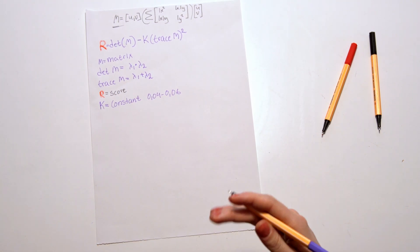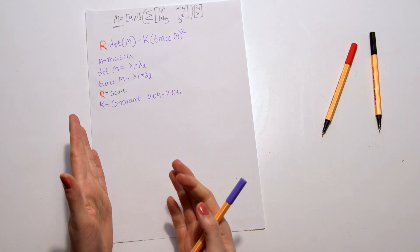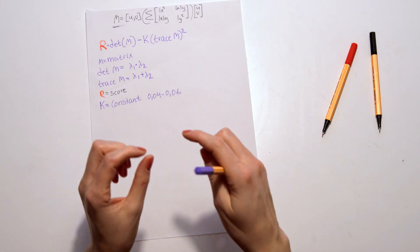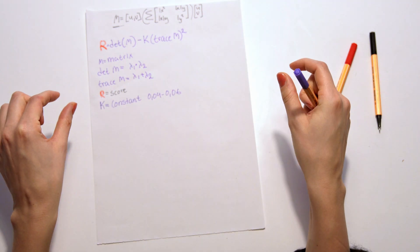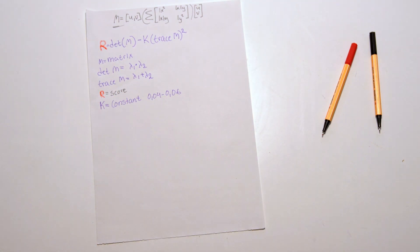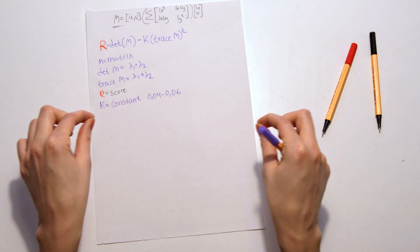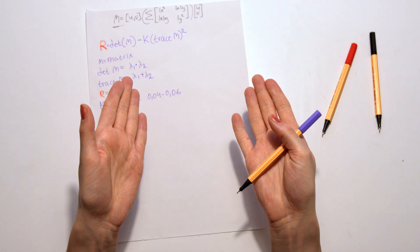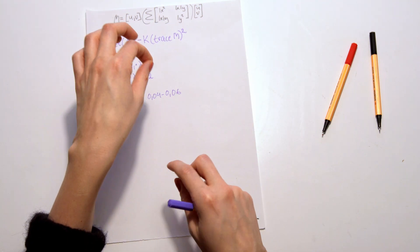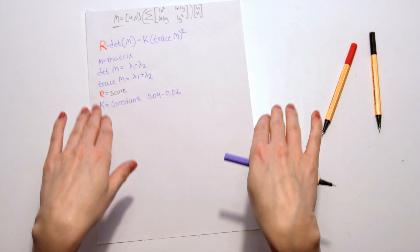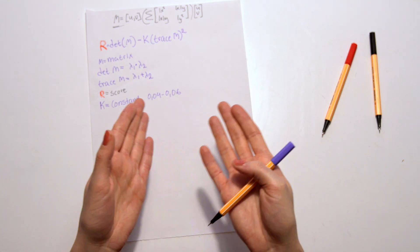And we usually set it between 0.04 to 0.06. And what I showed you before with the lambda, that's more like an understanding of the directions of when we move the window. That if it's big in both directions, we will have a corner. If it's in just one direction, it's an edge. And if there's no big change, there's basically a flat area.